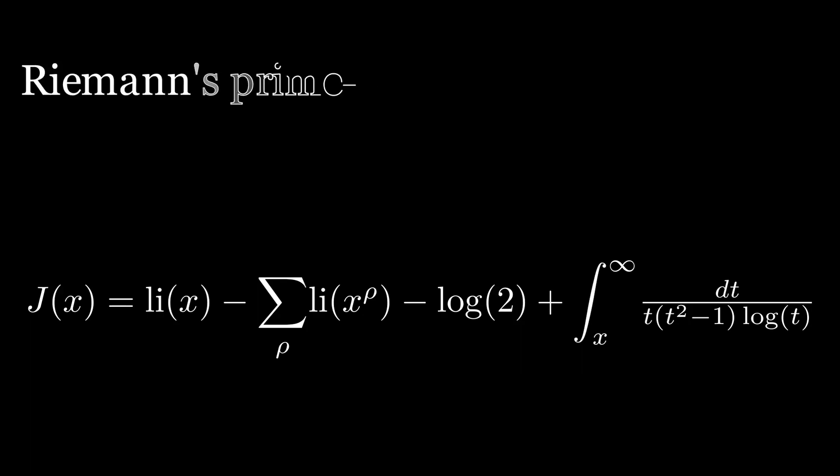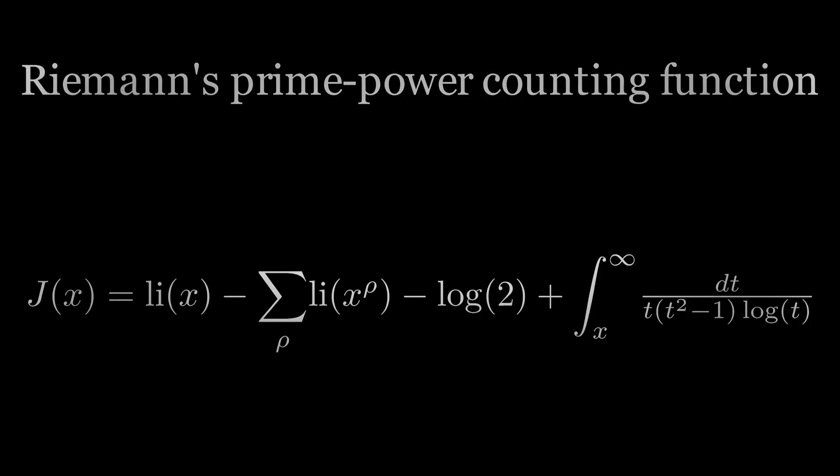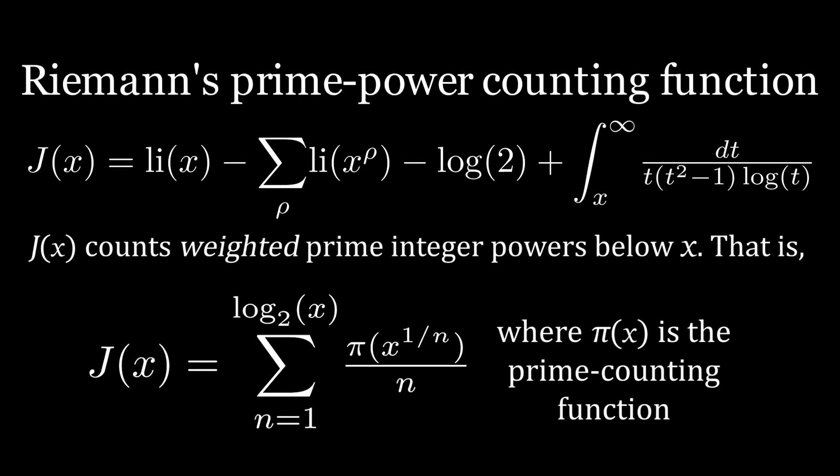This modified prime counting function is sometimes called Riemann's prime counting function, which I'll denote with capital J of x. This function really considers weighted prime powers. What I mean by this is that for every prime power p to the k, the function increases by a value of 1 over k.